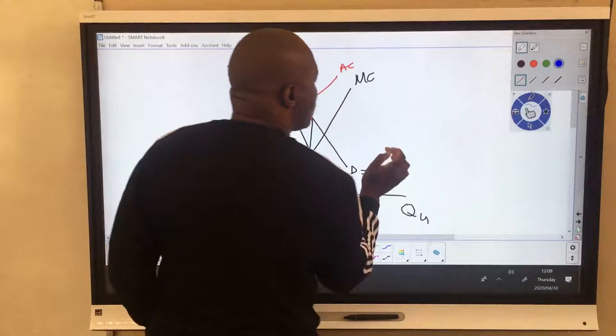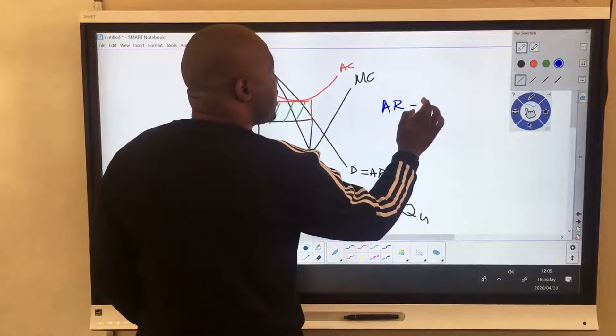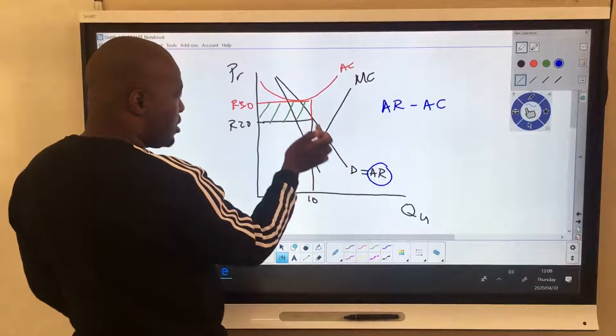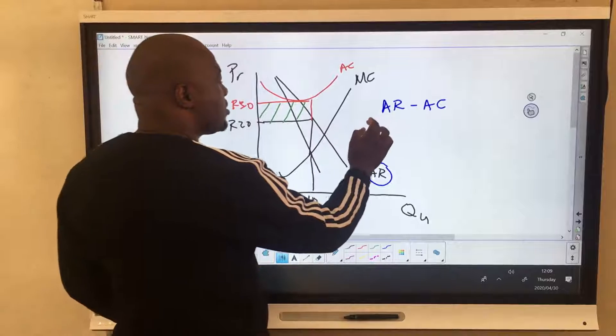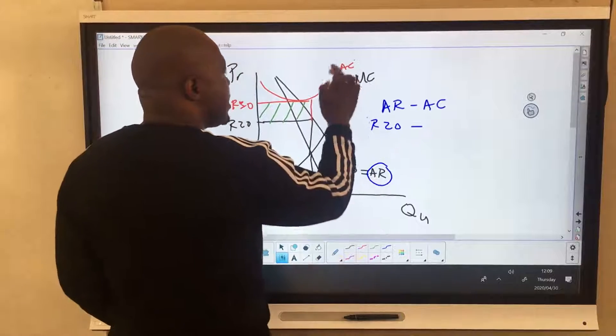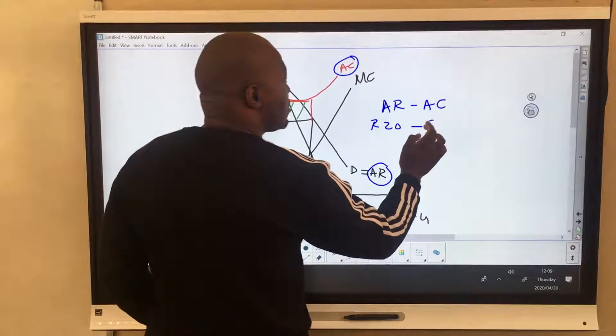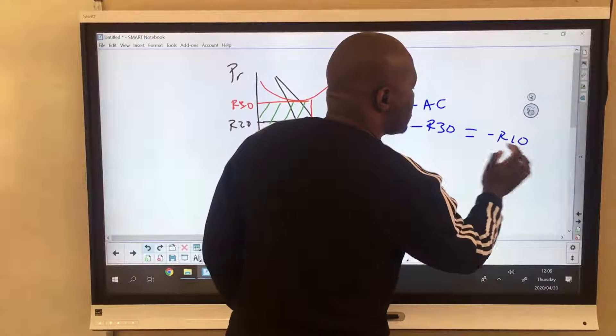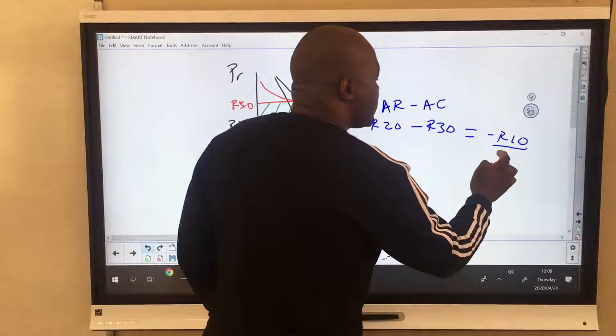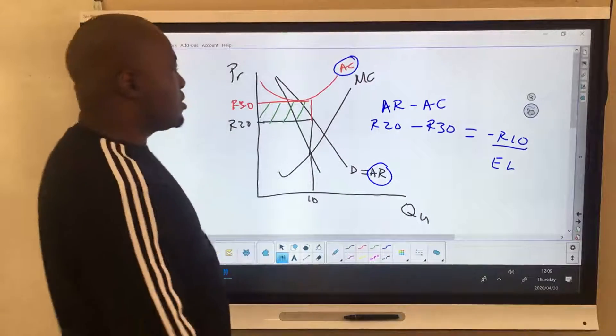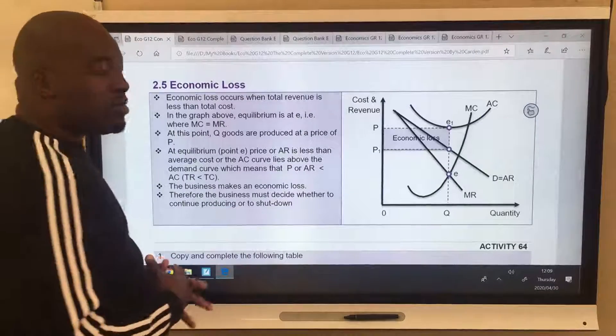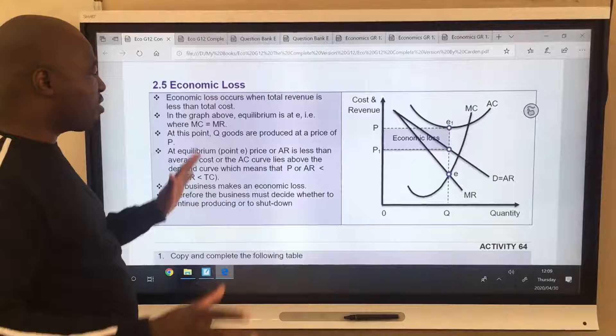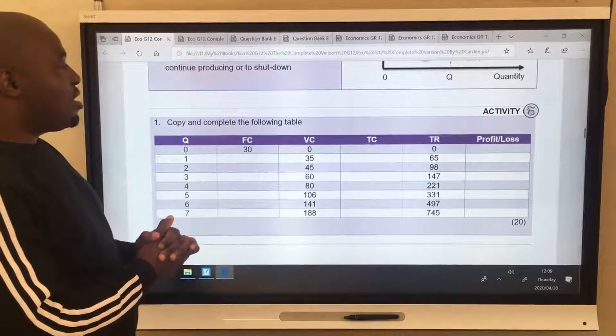How? Why are we saying this is economic loss? We use the formula AR minus AC. Where is our AR? Our AR, look here, it's 20 minus. Where is our AC? Our AC is 30. So what is 20 minus 30? It gives you negative 10 rands. So whenever you get a negative, that's economic loss. So it's the same thing that we did in perfect. So this makes the whole dynamics of perfect and imperfect markets very, very easy.